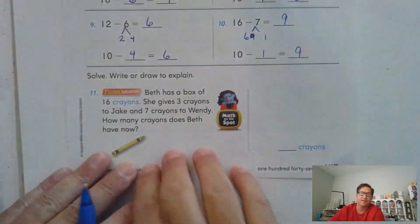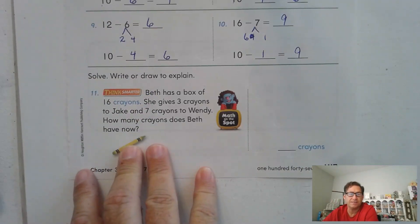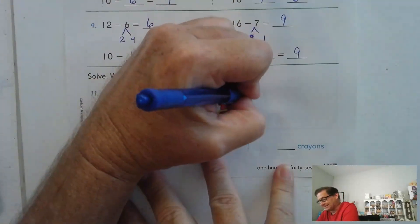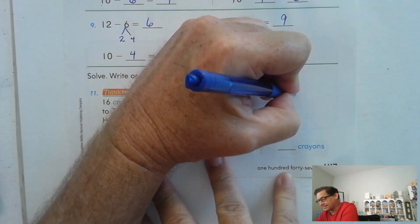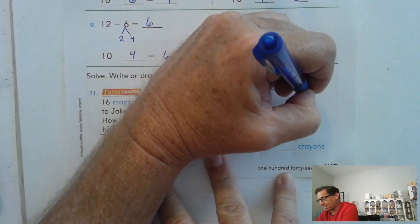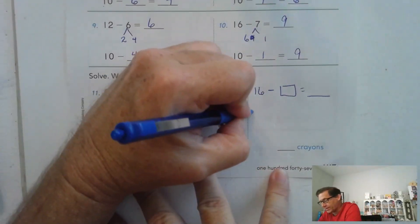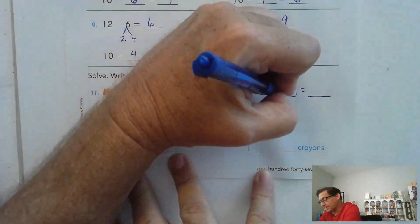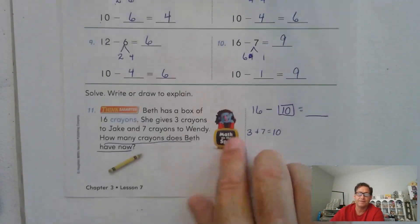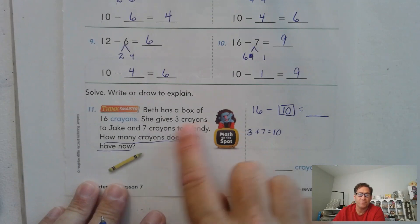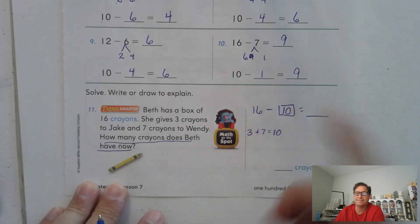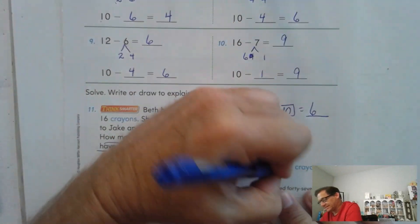Write or draw to explain. Beth has a box of 16 crayons. She gives 7 crayons to Jake and 3 crayons to Wendy. How many crayons does Beth have now? She had 16 and we have to take away some amount. She gave away 3 and also gave away 7, so she gave away 10 in total. We add those together because we want to find out how many she gave away overall. So 16 take away 10 — she now has 6 crayons.